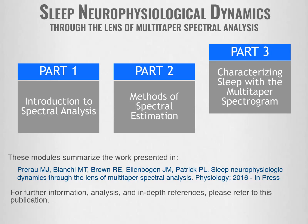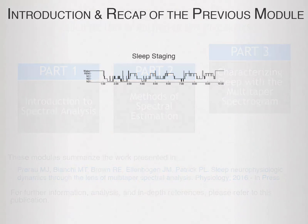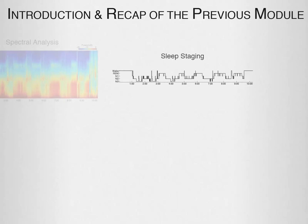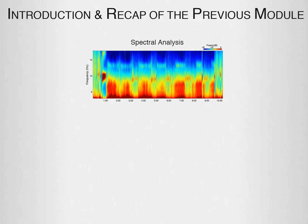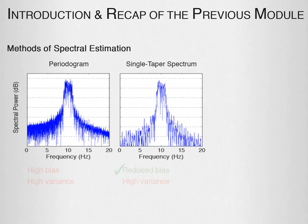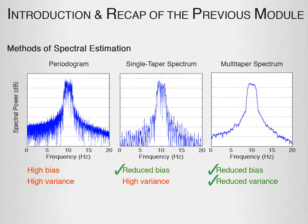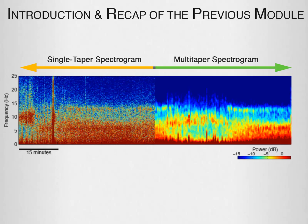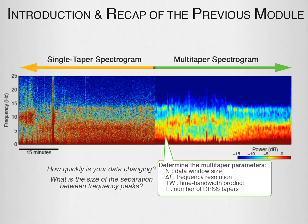This is the final module in this 3-part series on sleep neurophysiological dynamics through the lens of multi-taper spectral analysis. In the previous modules, we presented spectral analysis as an improvement over sleep staging, discussed the bias and variance limitations of the periodogram and single taper spectral estimates, and introduced multi-taper spectral analysis as a way of improving both bias and variance, greatly improving frequency resolution for characterizing the EEG signal. We also talked about the principled approach to determining the multi-taper parameters.